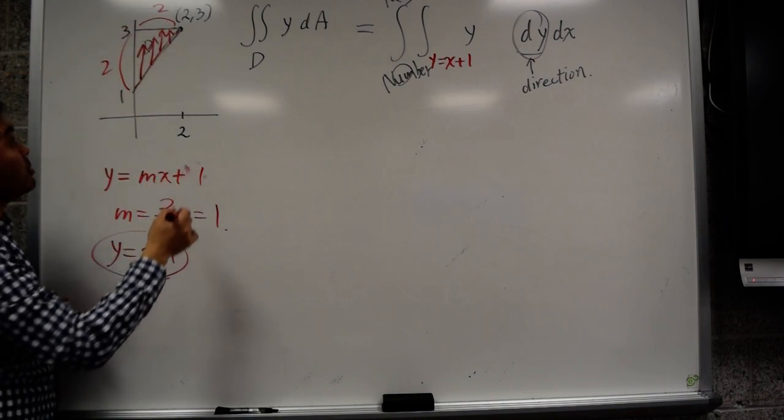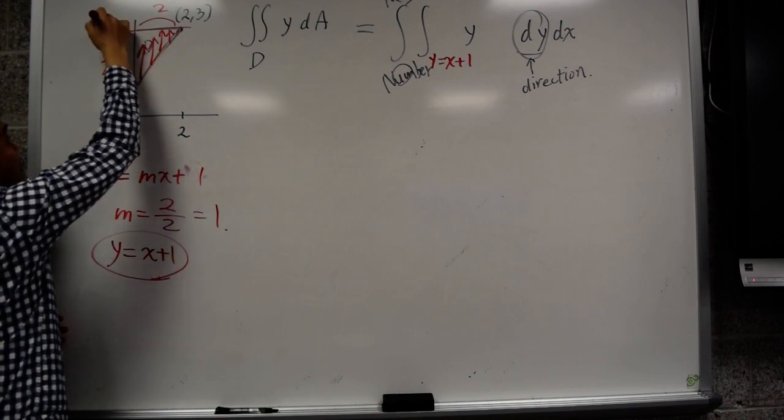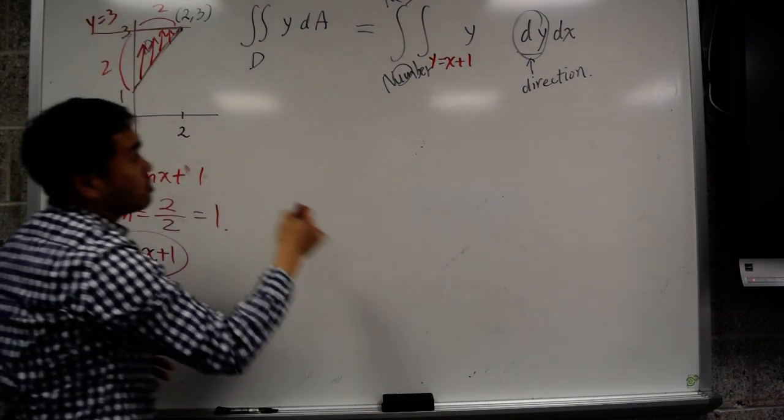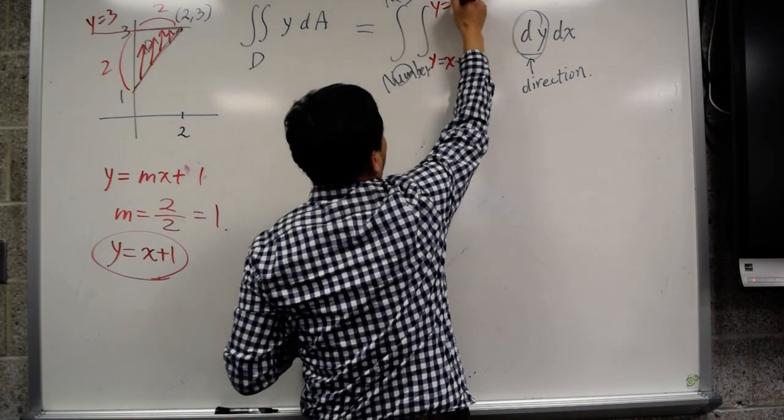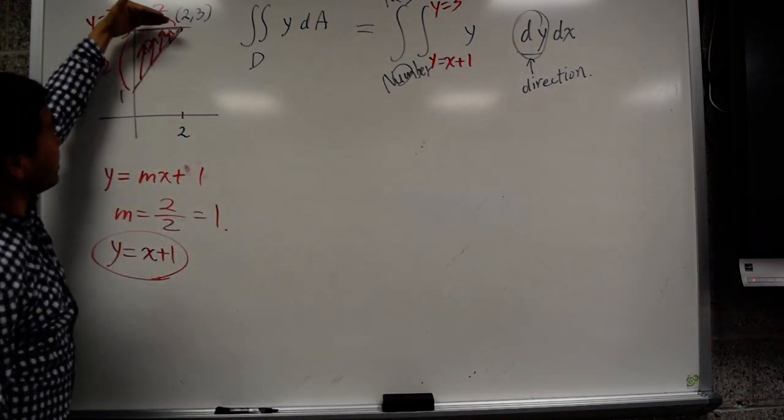That's y equals a number, right? That number, because it passes through 3, this equation is y equals 3. So you put y equals 3. And that really says you start from this line, you end at that line.